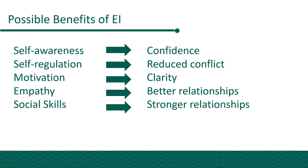Additional possible benefits from EI include the following. Self-awareness can lead to increased confidence in your ability to succeed. Self-regulation can result in reduced interpersonal conflicts or mistakes. Motivation brings clarity regarding desired outcomes to better direct or manage behaviors. Empathy enables better relationships with family members, coworkers, or community members — being able to engage, listen, and see where they're coming from. And social skills benefits include a stronger relationship and quicker desired outcomes in social situations by being able to relate to the other person.